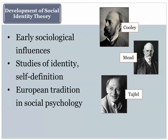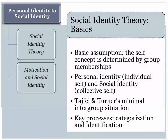Mead argued that we define and partly control who we are by negotiating our interactions with others. But probably most recently, the greatest influence comes from the European tradition in social psychology. Henri Tajfel, John Turner, and other investigators in France and England developed social identity theory to account for certain phenomena they had observed — specifically the basic minimal intergroup situation, where one individual encounters another. Their initial goal was to understand intergroup conflict.